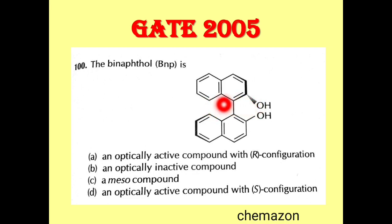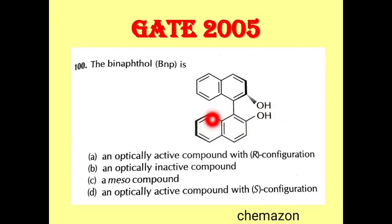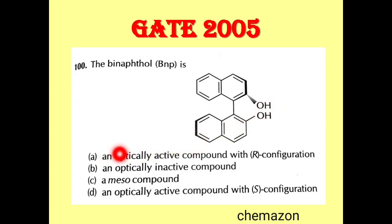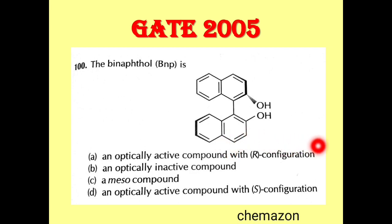On one naphtol ring, one group is the hydroxyl group and another is carbon — two different groups. The other ring similarly has one hydroxyl and one carbon group. So this molecule satisfies the condition for chirality in binaphtol molecules, meaning options B and C are incorrect. It is an optically active compound, so we now need to determine whether it is R or S configuration.